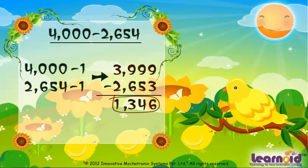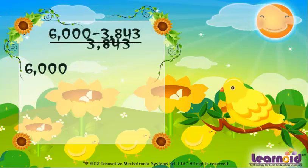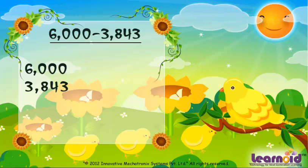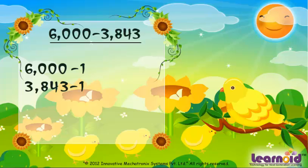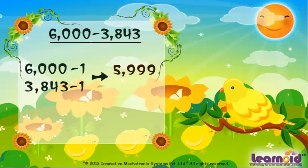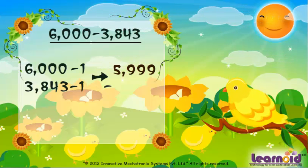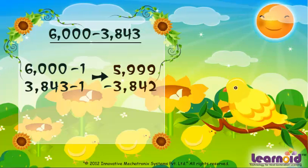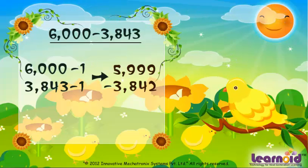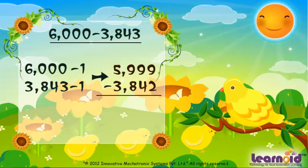Let's see another example. 6000 minus 3843. First subtract 1 from both the numbers. 6000 will become 5999 and 3843 will become 3842. Now, it can be easily subtracted.